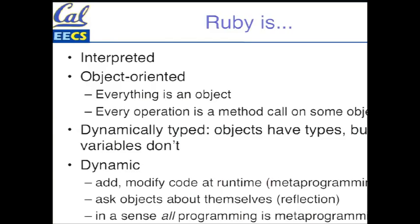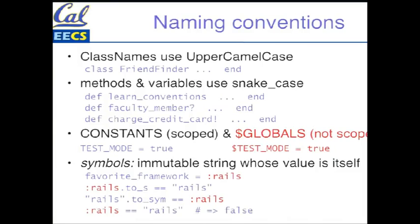So let's do some basics — some naming conventions. Every language has naming conventions. If you're not familiar with the terms camel case and snake case: camel case has humps in it. Upper camel case is when the first letter is upper case. Snake case has little underscores between the words — these are real terms, folks, I'm not making them up. So conventionally, when you define a class, you use camel case. Method names and variable names typically use snake case.